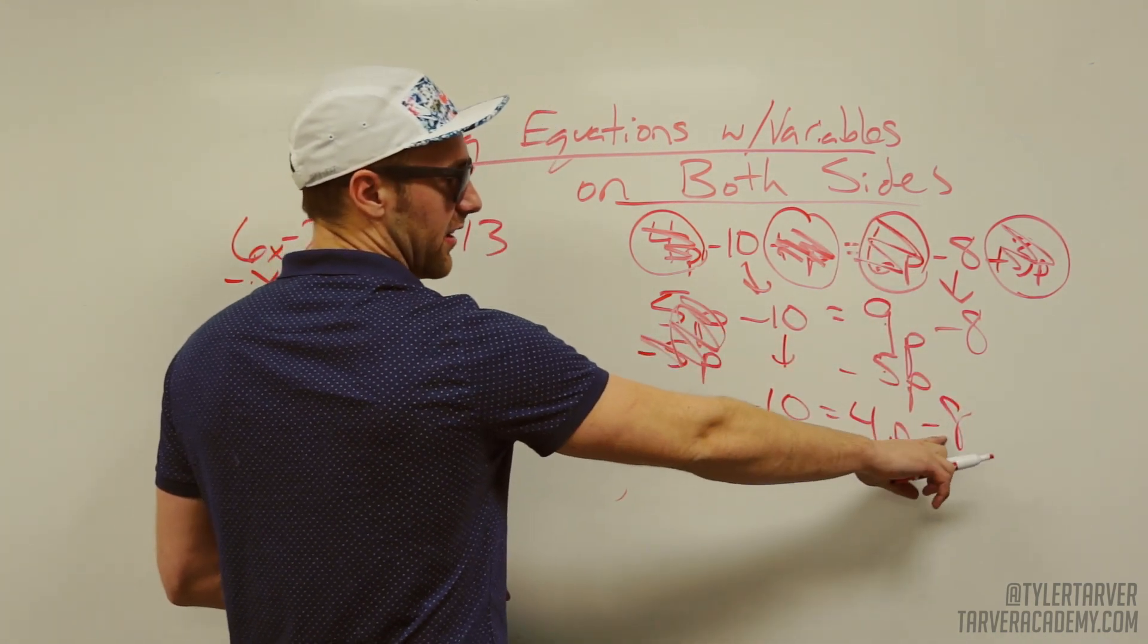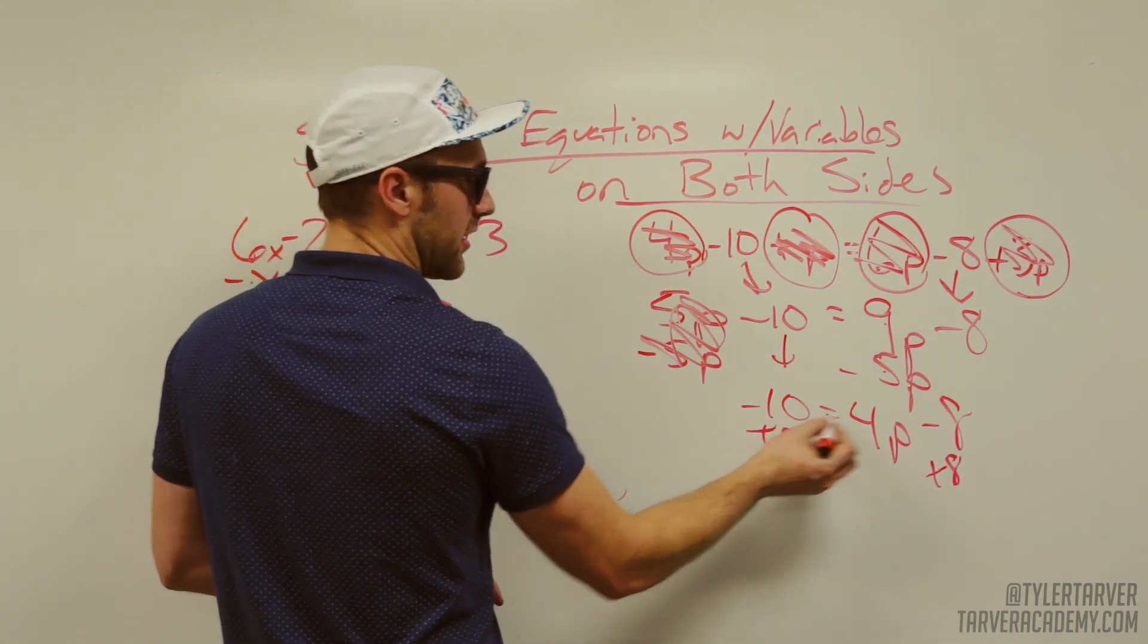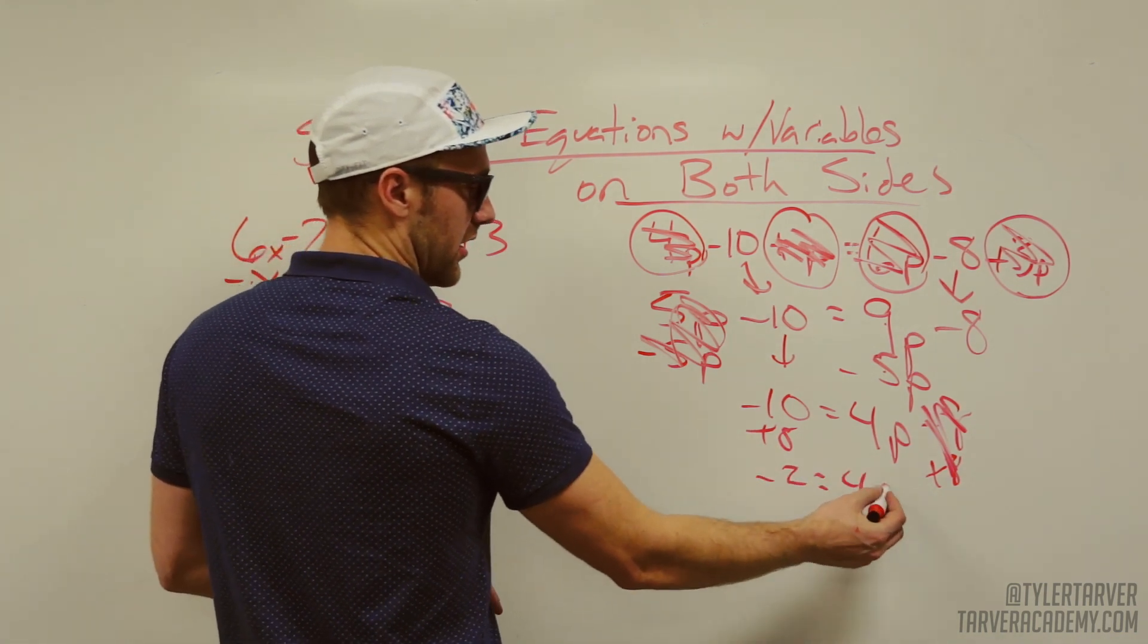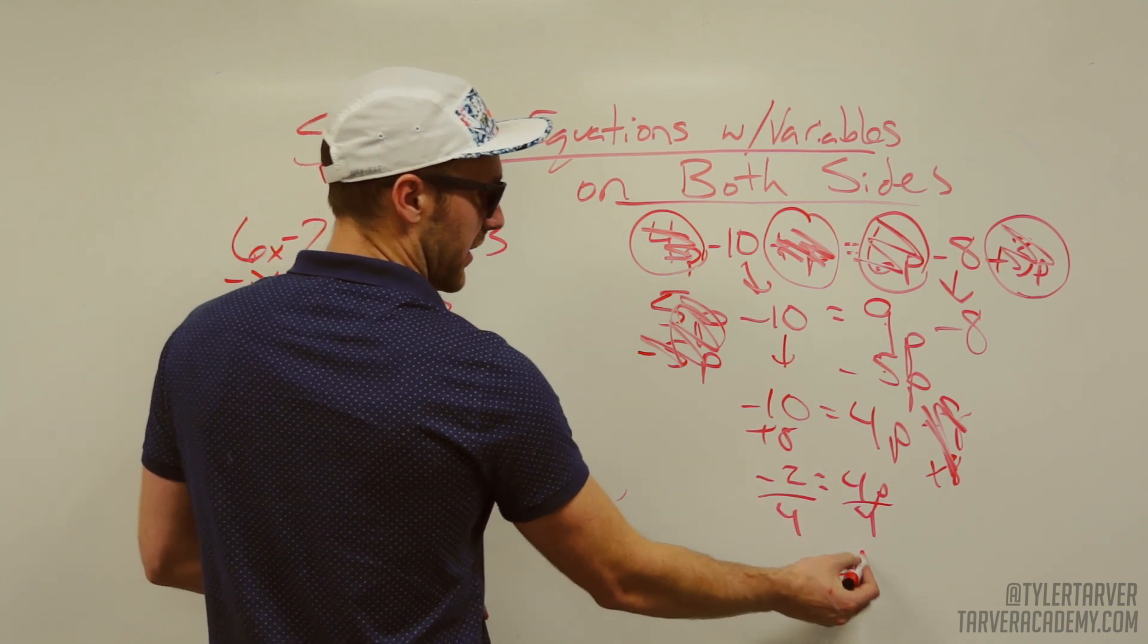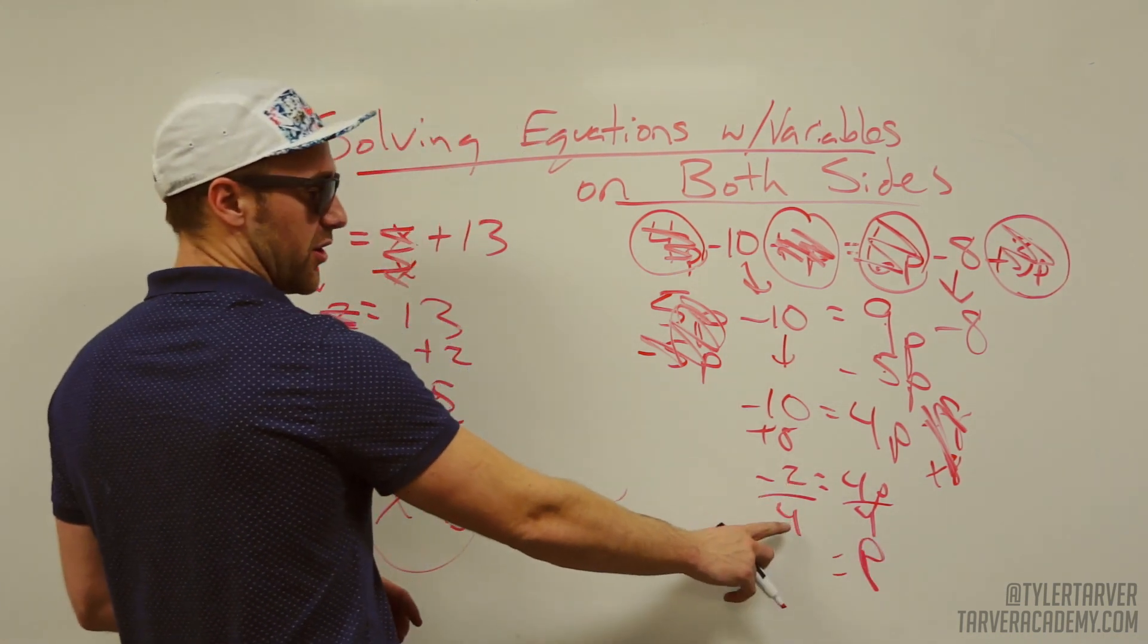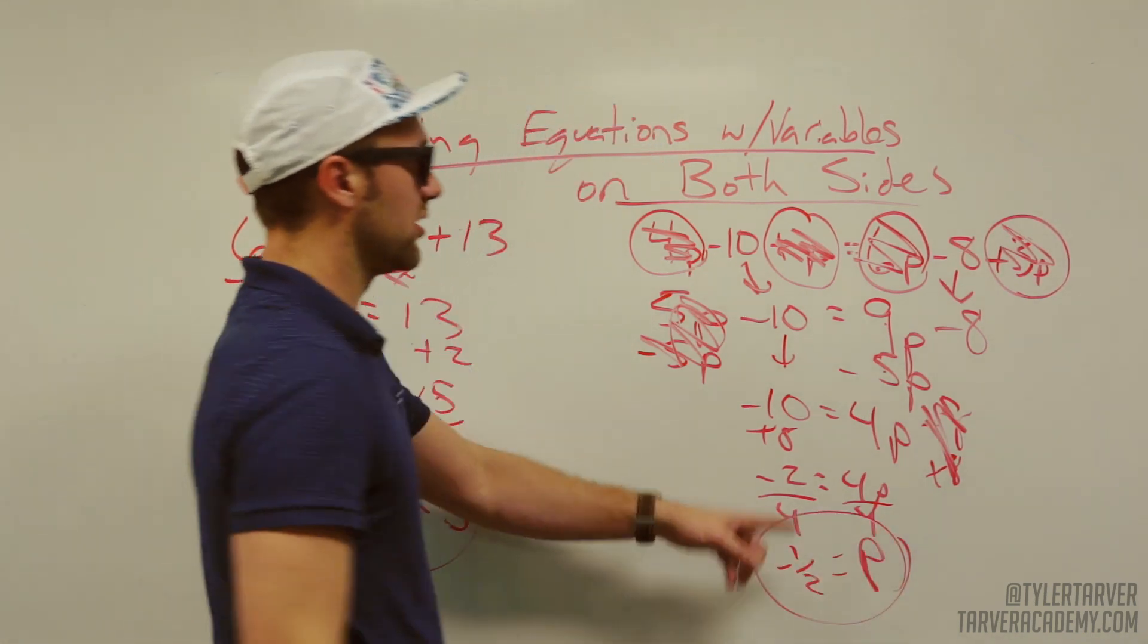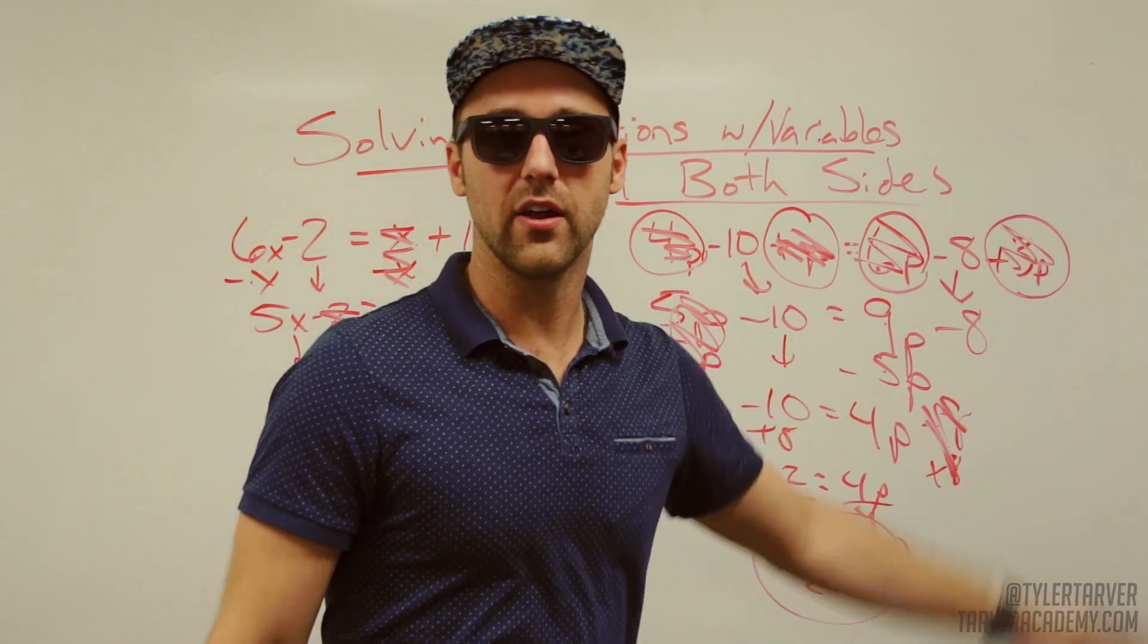Now, I've just got to get p by itself. So, I'm going to add 8 to both sides. Cancels out over here. Negative 10 plus 8 is negative 2. And then I got to divide 4 on both sides. P, I hope you guys can still see that. Negative 2 divided by 4. I can simplify that to negative 1 half. Now, I can always plug that in up here and work it and see if whatever I got on this side equals to what I got on this side.